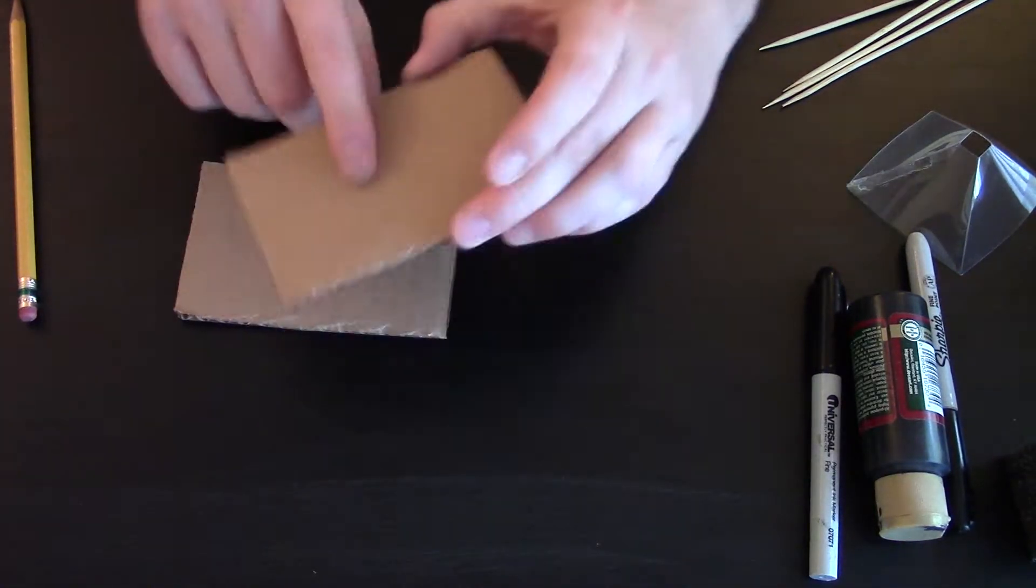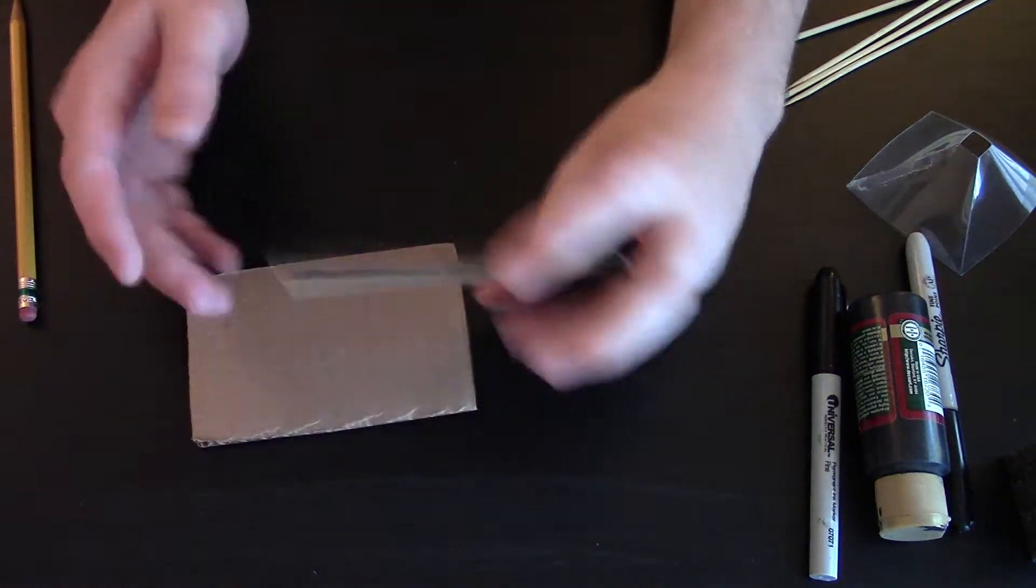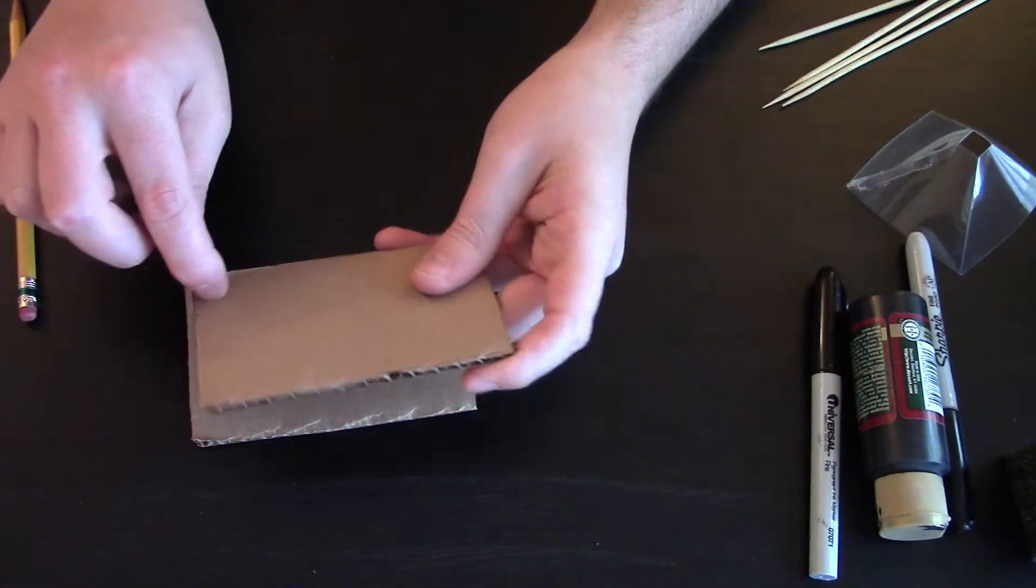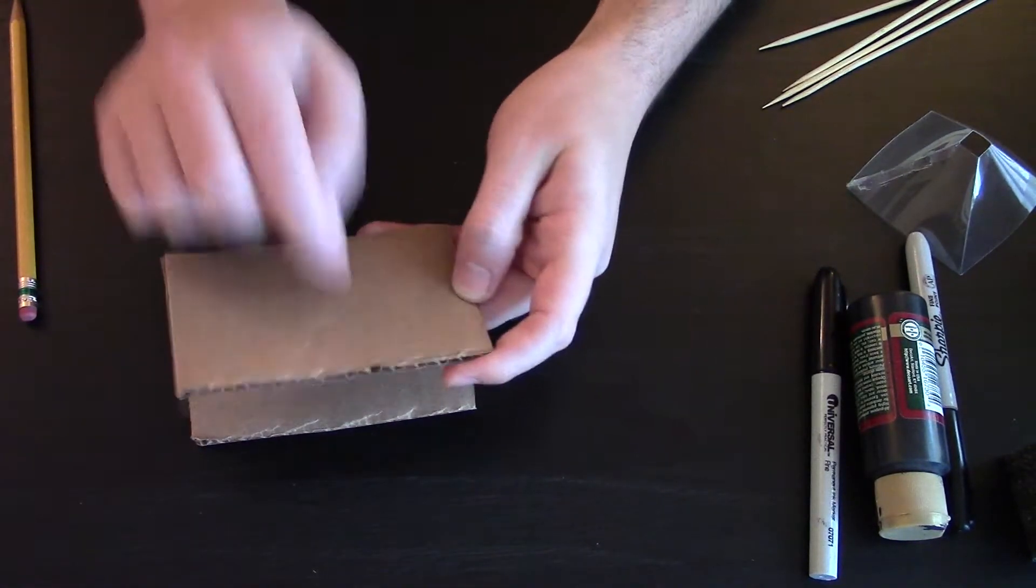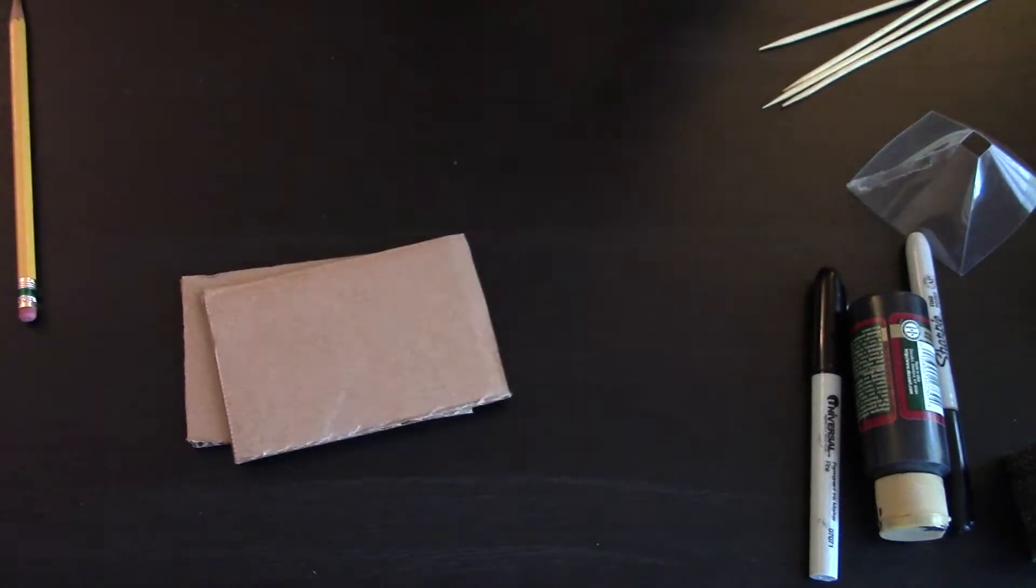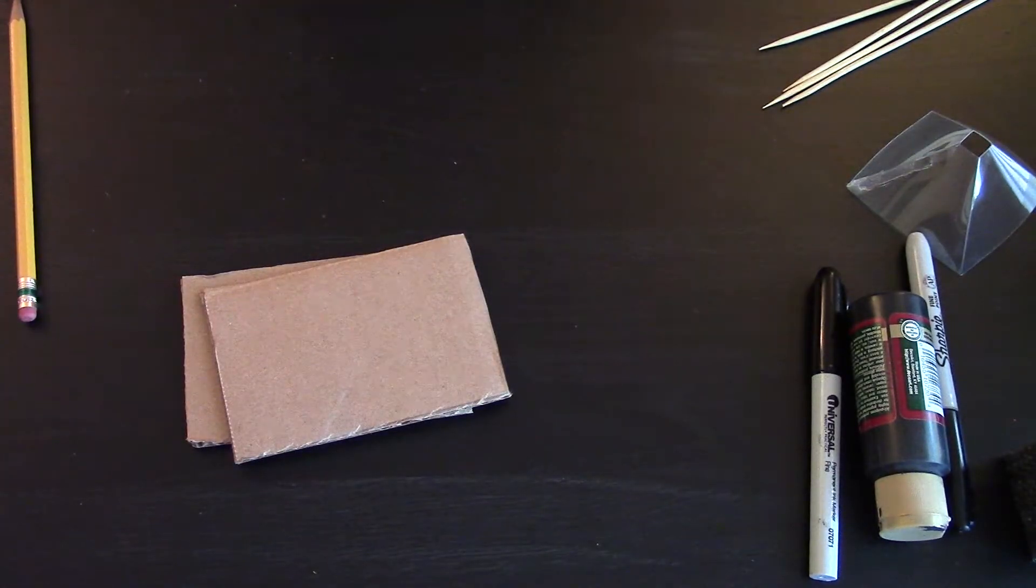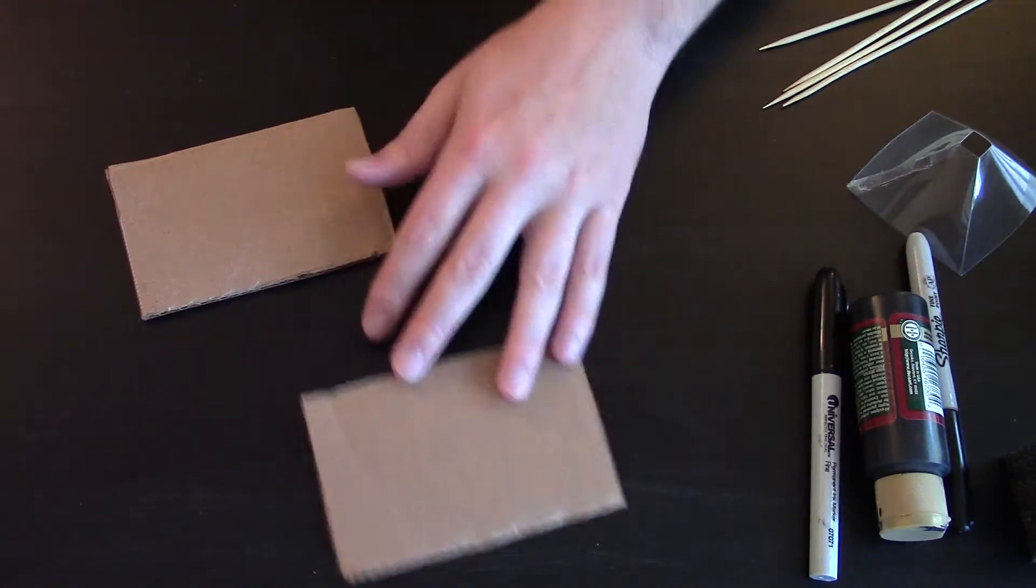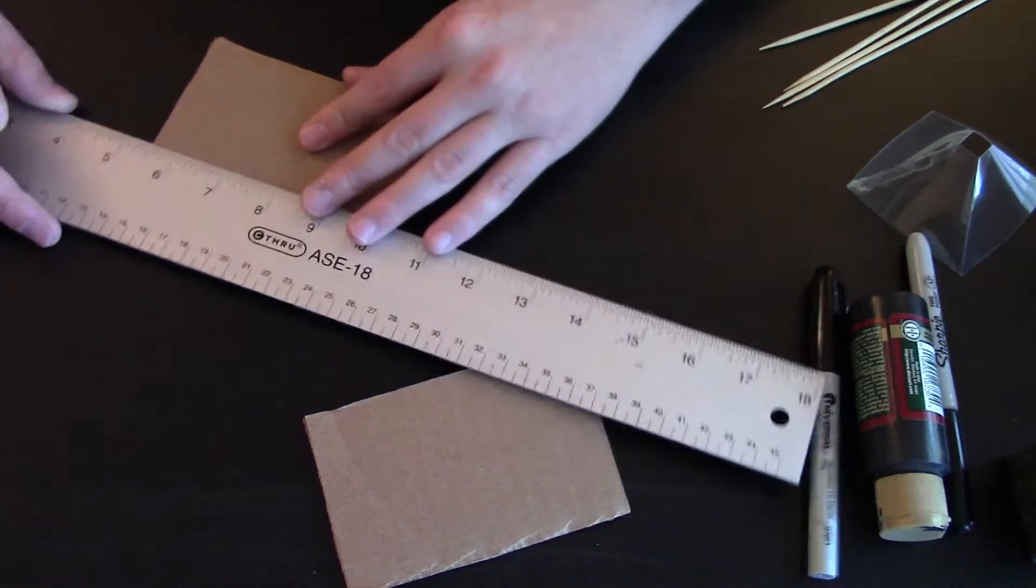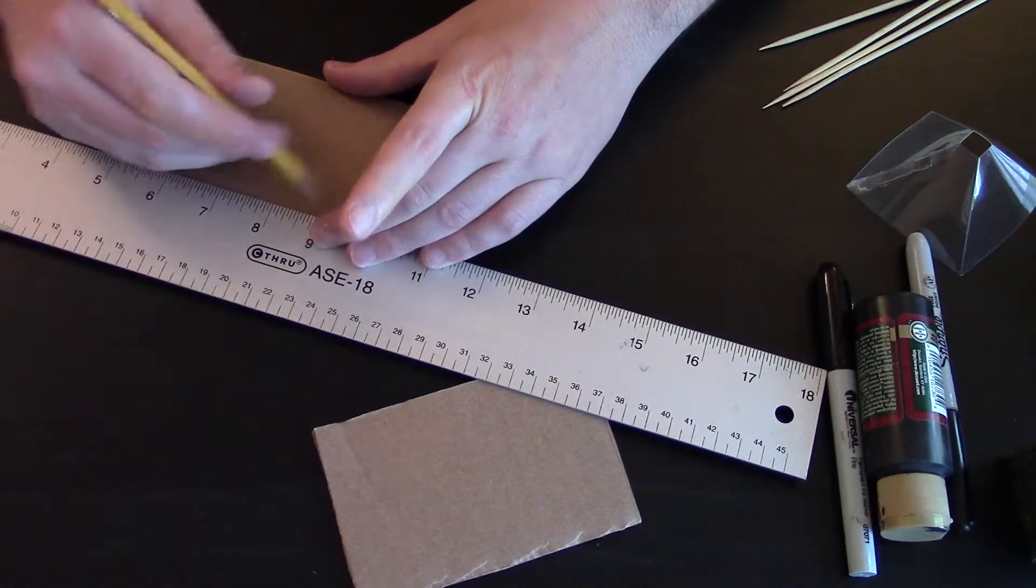Now one is going to be the bottom, one is going to be the top, and we do want to cut a hole within the top one. So you may actually want to use a razor blade for that. Just make sure you have something to cut on so you're not cutting through whatever you're working on. And you may want to use a ruler just to take it in a little bit here.